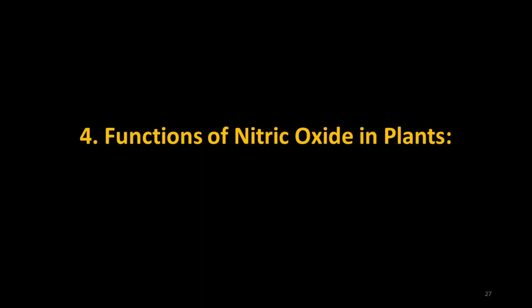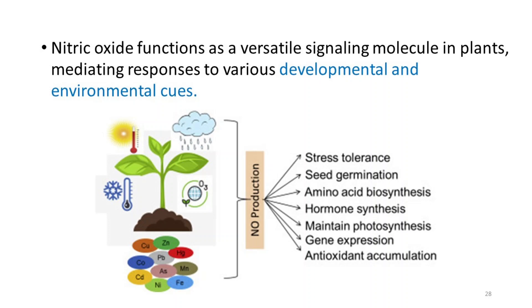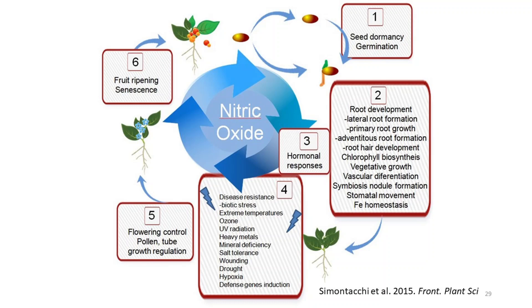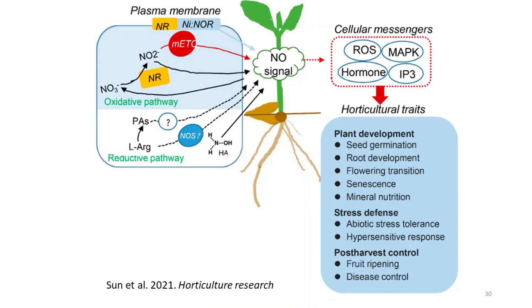Let's talk about the functions of nitric oxide in plants. Nitric oxide functions as a versatile signaling molecule in plants, mediating responses to various developmental and environmental cues. Simontacchi et al. in 2015 published a diagram showing numerous functions of nitric oxide in plants. Further, Sun et al. in 2021 also explained the synthesis of nitric oxide, how it activates other signaling cascades, and thus drives various functions in plants.